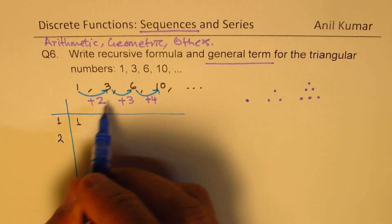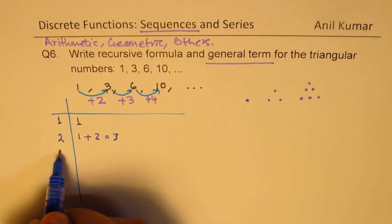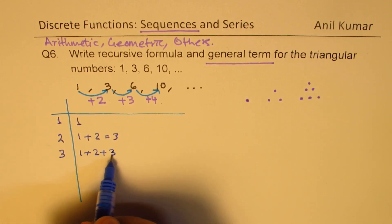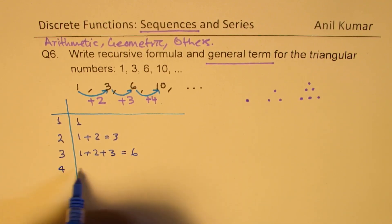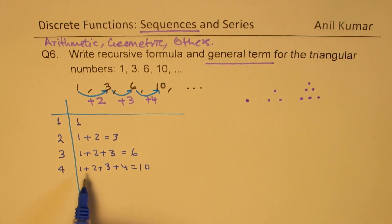The second number is 1 + 2 and we get 3. The third number is 1 + 2 + 3 and we get 6. The fourth number is 1 + 2 + 3 + 4 and then we get 10. So likewise, what you see - this is sum of natural numbers.